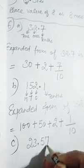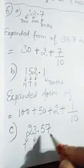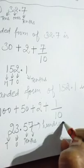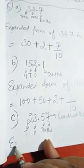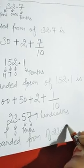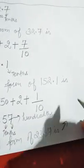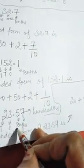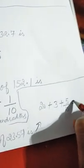Part C: the number is 23.57. Positions are ones, tens, tenths, and hundredths. Expanded form of 23.57: 3 ones is 3, 2 tens is 20, then decimal becomes plus, 5 tenths is five over ten, and 7 hundredths is seven over 100. So: 20 + 3 + 5/10 + 7/100.